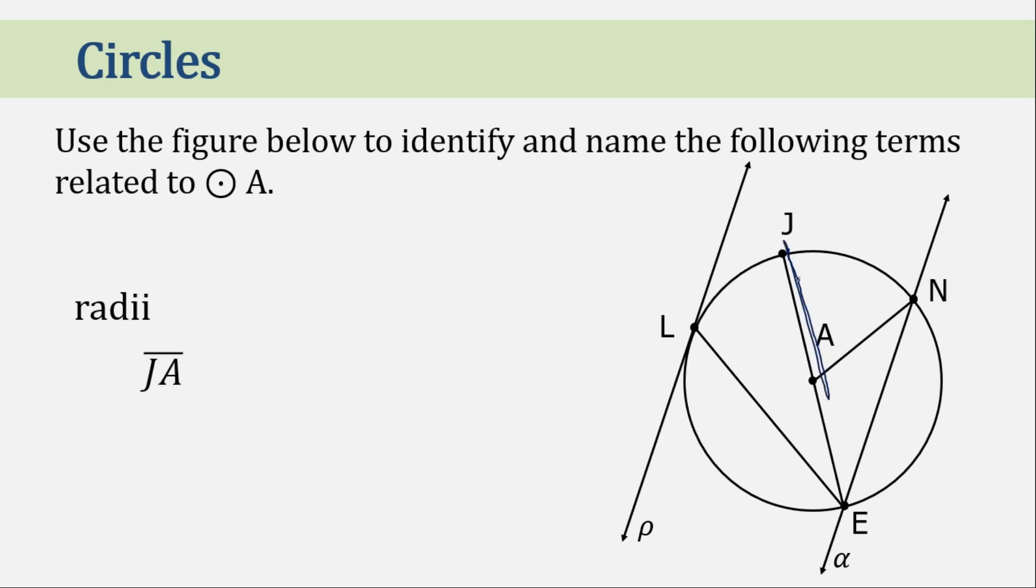We have here first segment JA. Be mindful of the symbol at the top. Or AJ. It could be AJ, AE. Again, radius is from the center to a point on the circle. And lastly is NA. You can name it AN, AJ, or AE. It doesn't matter which letter is first.